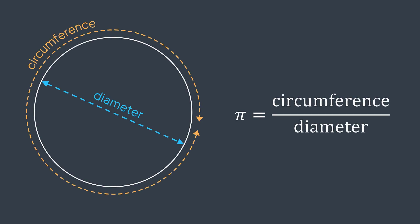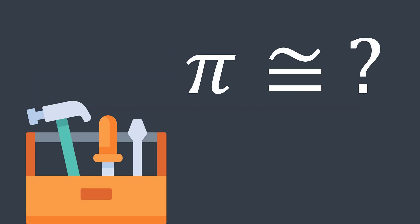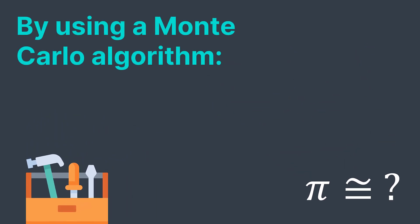Pi is the ratio between the circumference of a circle and its diameter, and we have many methods to approximate its value. The one we will see today is by using a Monte Carlo algorithm.